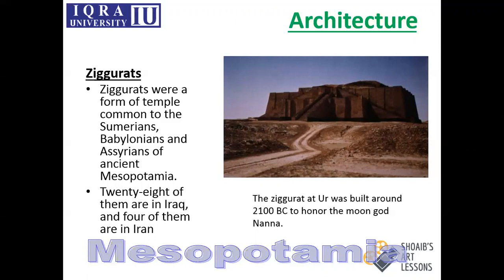In Mesopotamia, there were 32 ziggurats in total, out of which 28 of them are located in Iraq and four of them are in Iran.